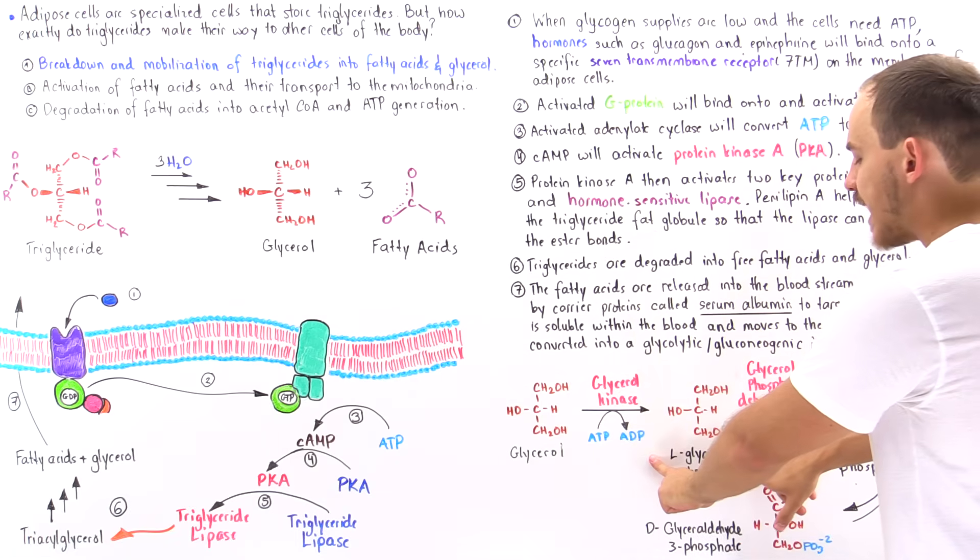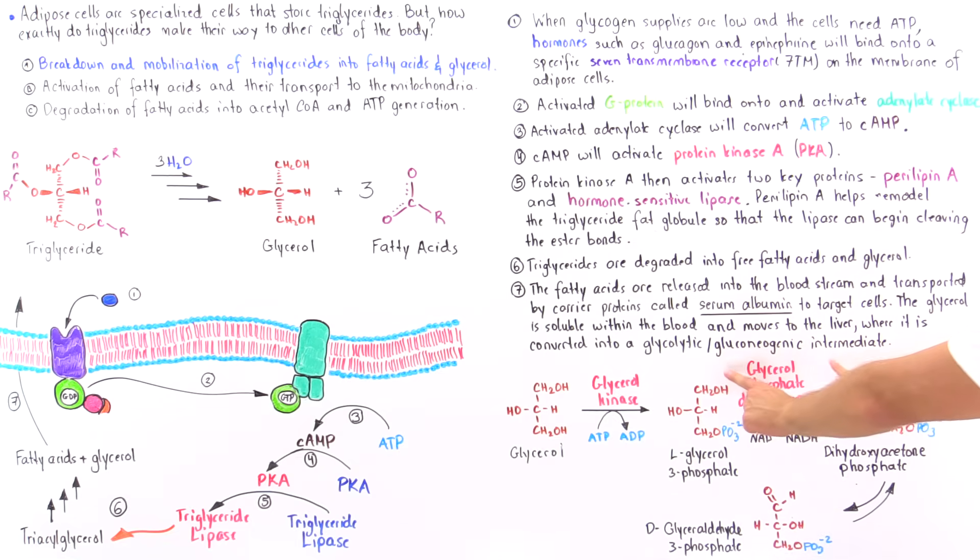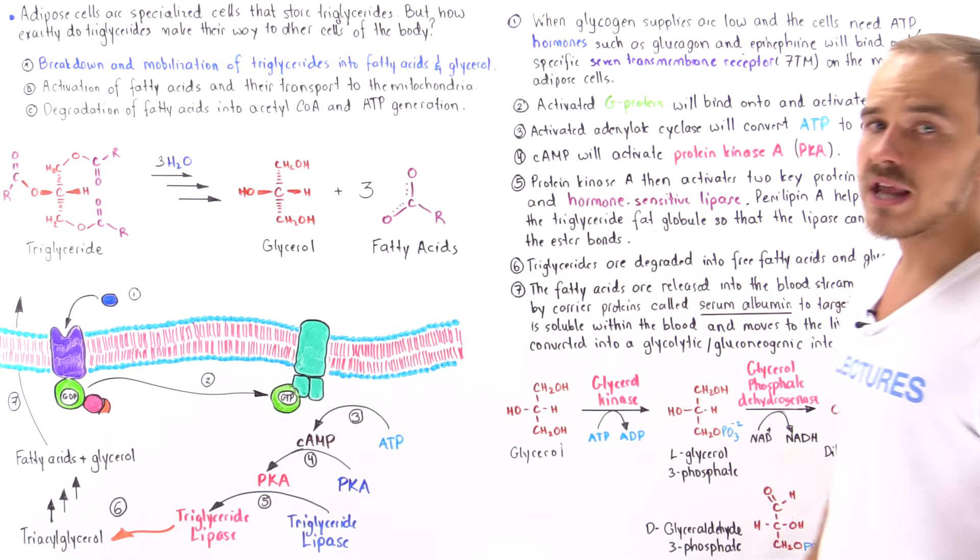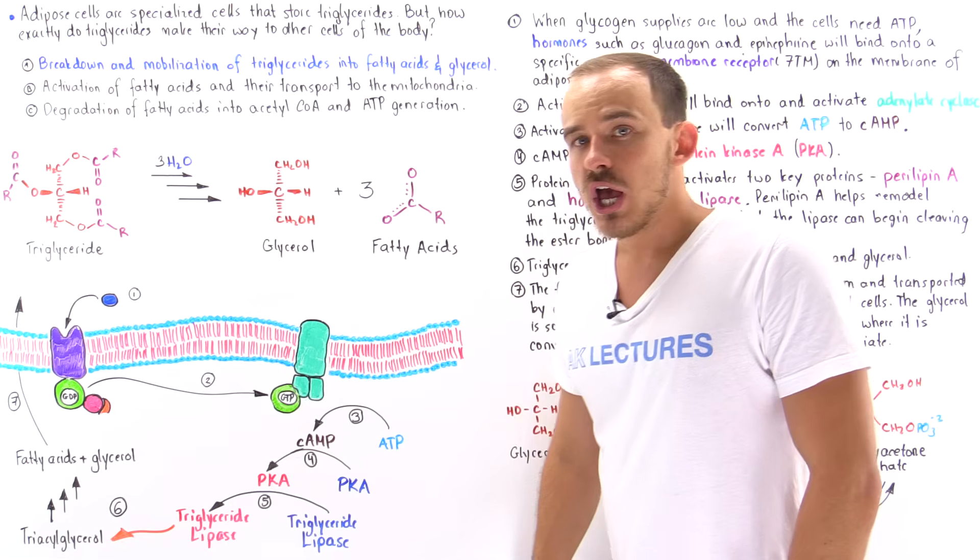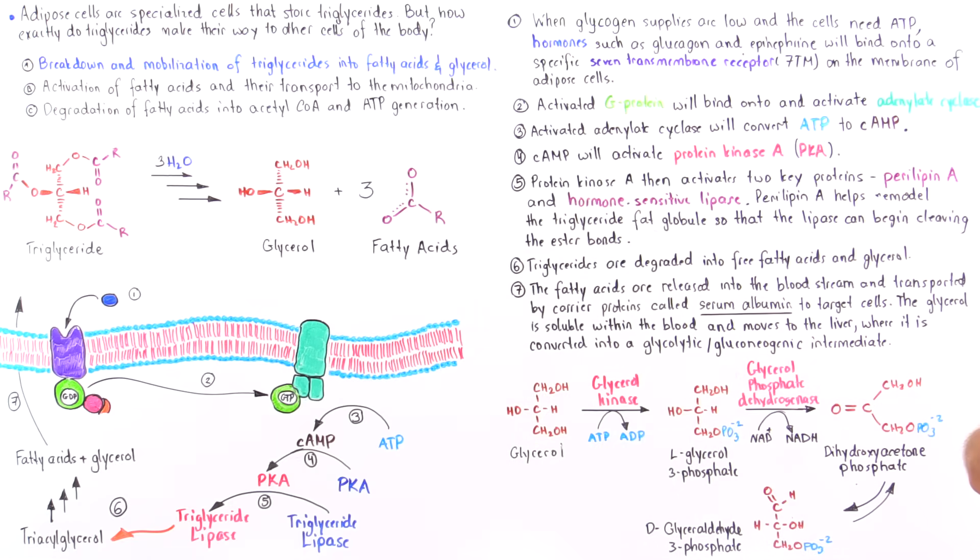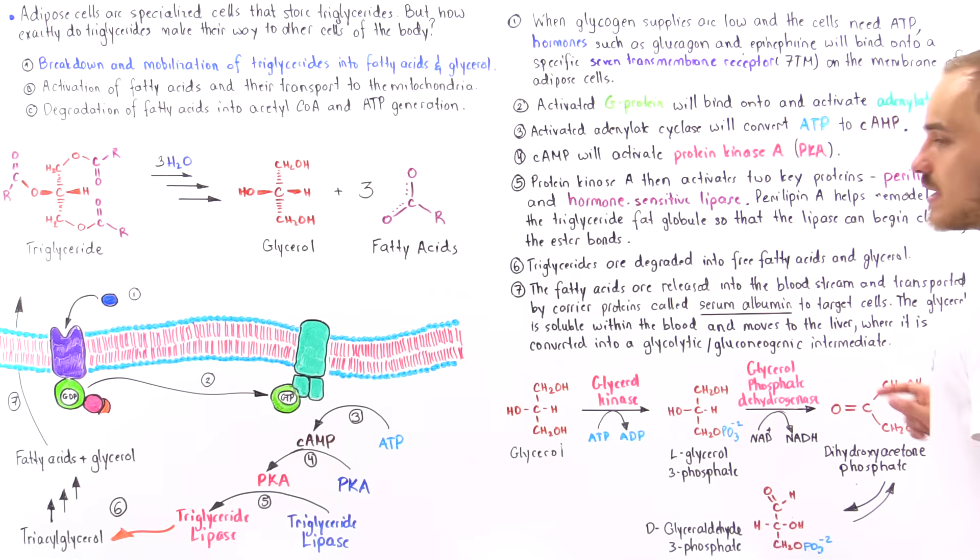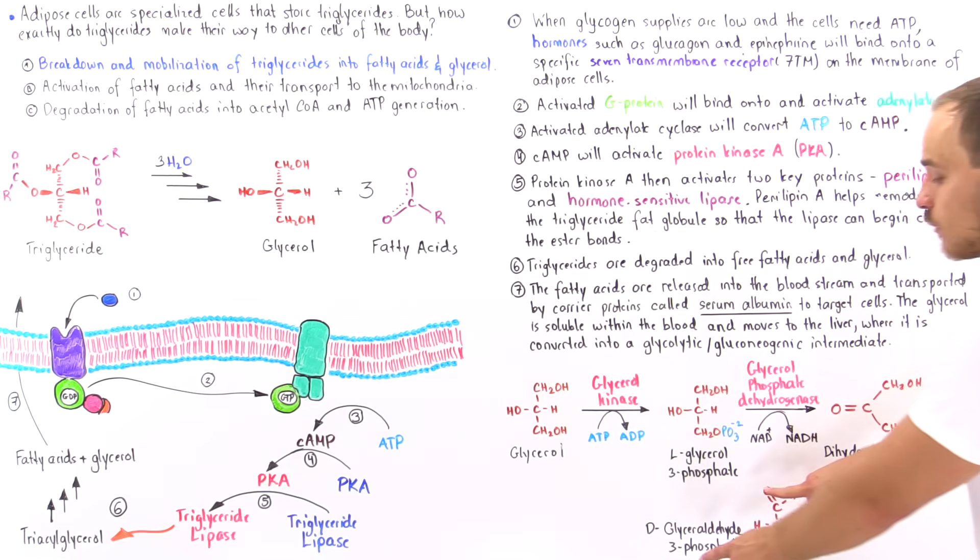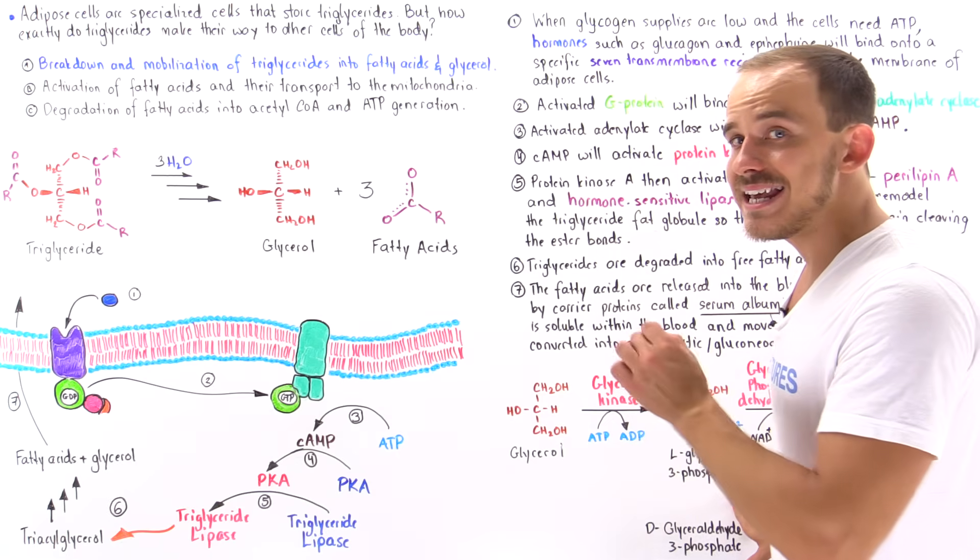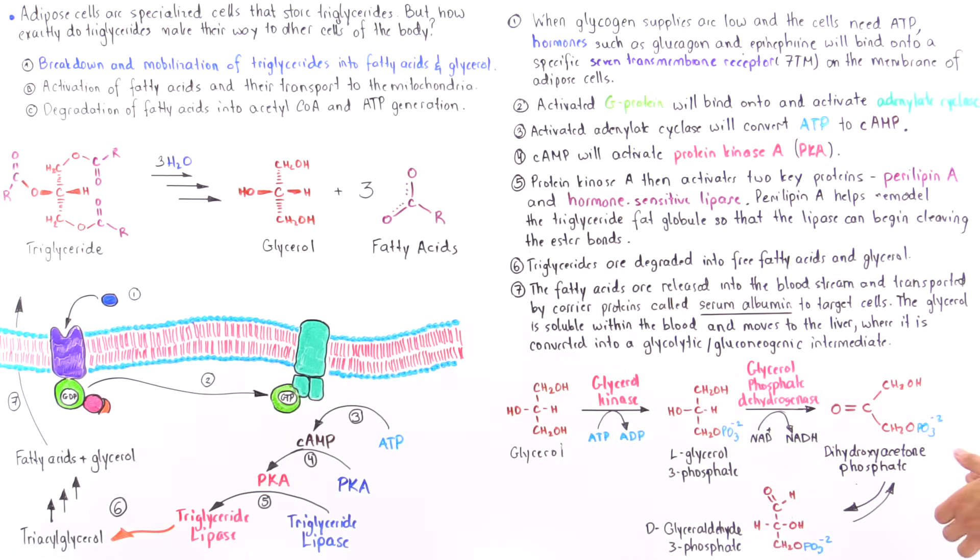What happens next is that glycerol-3-phosphate is transformed into dihydroxyacetone phosphate by the enzyme glycerol-phosphate dehydrogenase, and it also reduces the NAD+, generating NADH. This is essentially an oxidation reaction where the glycerol-3-phosphate is oxidized into dihydroxyacetone phosphate. Once we form this, it is transformed into the D-isomer of glyceraldehyde-3-phosphate. Recall that glyceraldehyde-3-phosphate is an intermediate of both the glycolytic pathway, glycolysis, as well as gluconeogenesis.